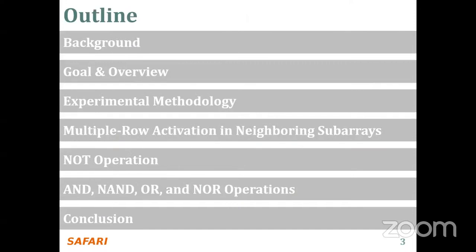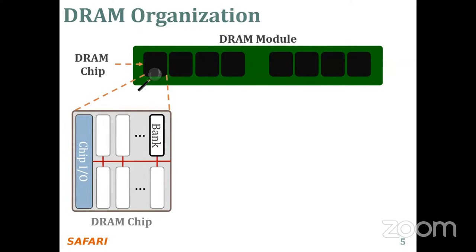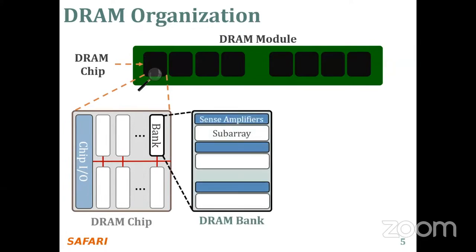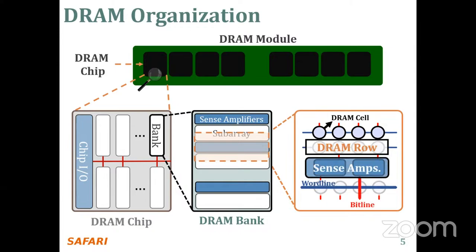Here's the outline of my talk. Let's start with a brief background. DRAM is used as main memory in many computing systems, and a DRAM module consists of multiple DRAM chips — each black square in this DRAM module. Each chip contains multiple banks, and each bank contains multiple subarrays and sense amplifiers. Inside a subarray, we have a two-dimensional array of DRAM cells, and a row of DRAM cells forms the DRAM row, connected through a word line, and a row of sense amplifiers is connected to these cells through bit lines.